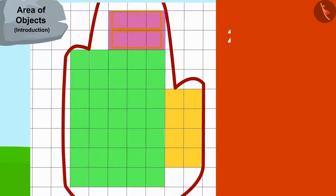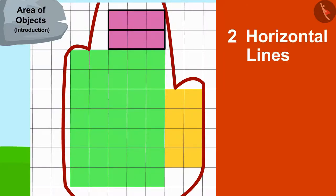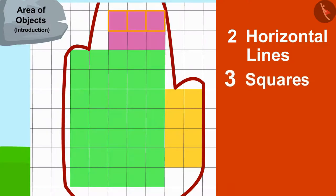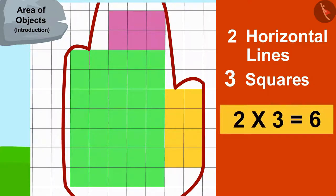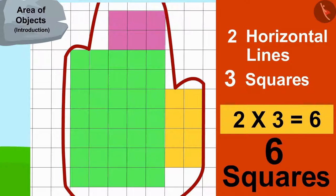This rectangle has two horizontal lines and each of the lines has three squares. That means this rectangle has two times three or six squares.